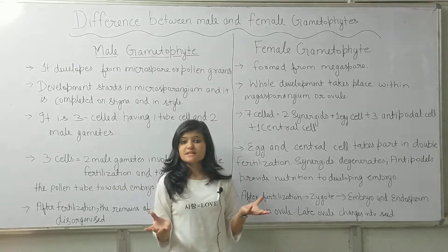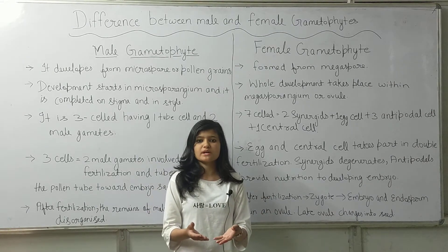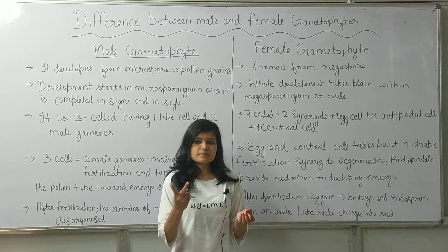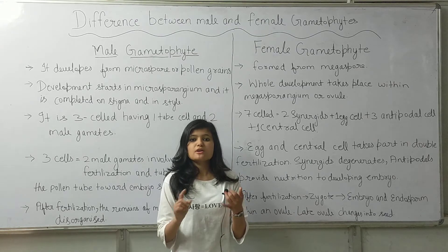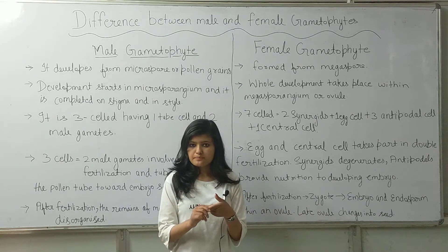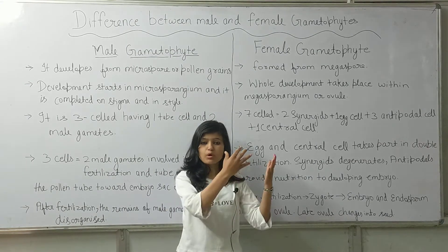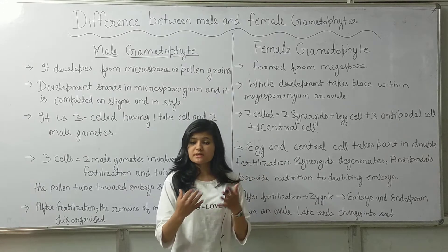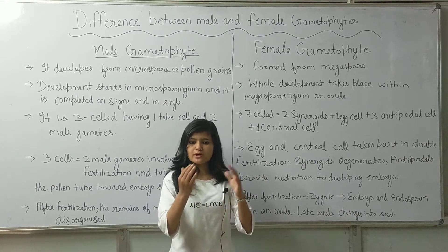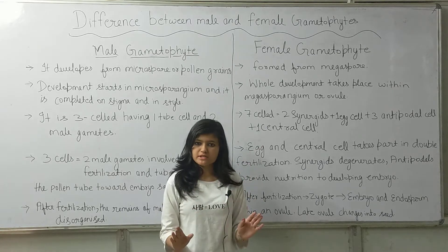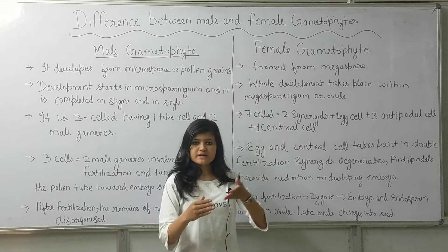The 7 cells of the female gametophyte include two synergids and one egg cell. The function of the synergids is to guide the pollen tube to the embryo sac. One synergy degenerates after fertilization, while the other synergid persists during fertilization.